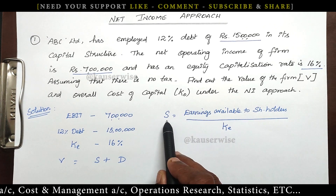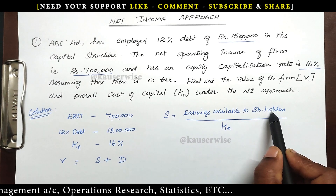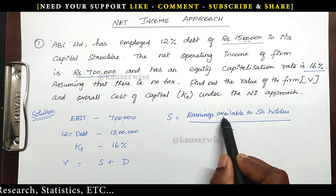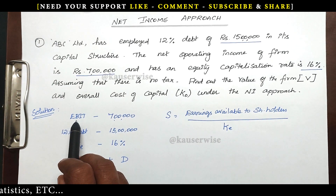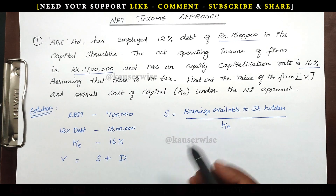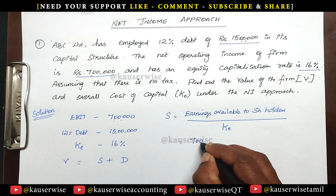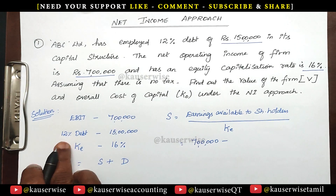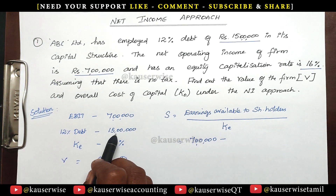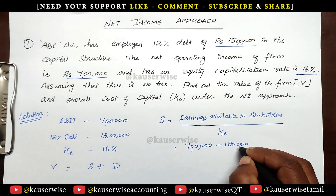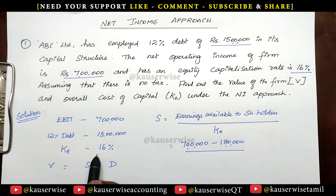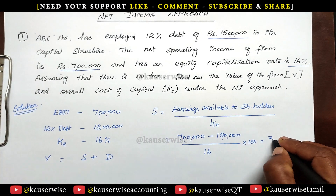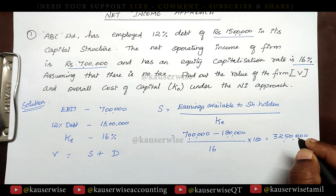The formula for S is: earnings available to equity shareholders divided by cost of equity. To find earnings available to shareholders: EBIT minus interest on debt. EBIT is 7 lakhs. Under the net income approach there is no tax, so we only subtract interest. Interest is 12% on 15 lakhs, which equals 1 lakh 80,000. So earnings available to equity shareholders equal 7 lakhs minus 1 lakh 80,000, which is 5 lakh 20,000. Dividing by KE of 16%, we get S equals 32 lakh 50,000. This is the market value of shares.